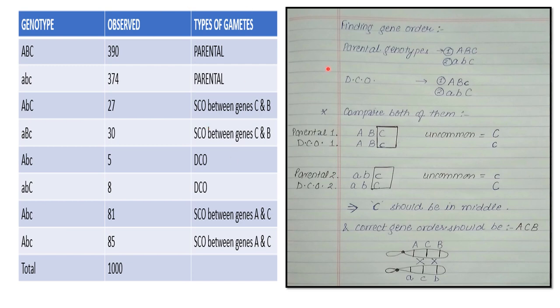What do we have to find? We have to find the gene order and the gene distance between the genes - between these two genes, between these genes, and between these genes. First we have to find the gene order. Remember, it's not that whatever genotype is given is the gene order. Three genes you have - any gene order is possible: ABC, BAC, CAB, anything. So you have to find the gene order.